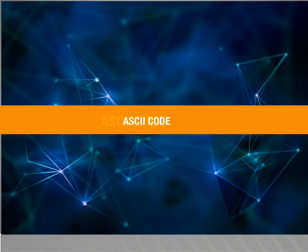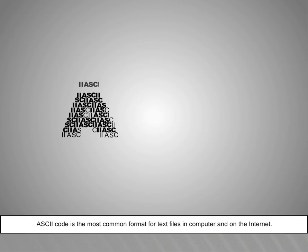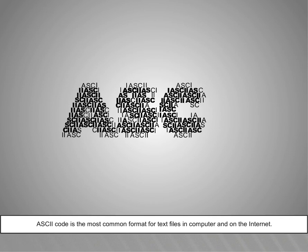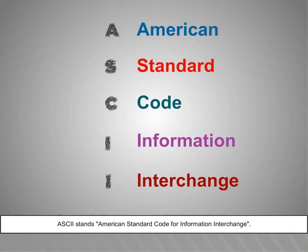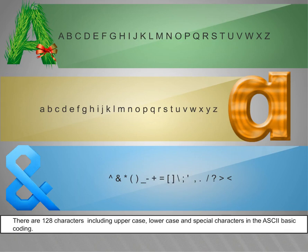ASCII code. In this video, we are going to see about what is ASCII code and its types. ASCII code is the most common format for text files on computer and on the internet. ASCII stands for American Standard Code for Information Interchange. There are 128 characters including uppercase, lowercase and special characters in the ASCII basic coding.